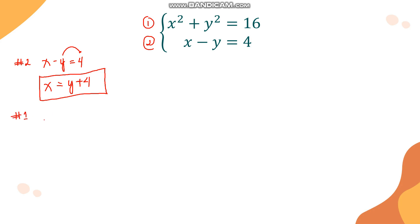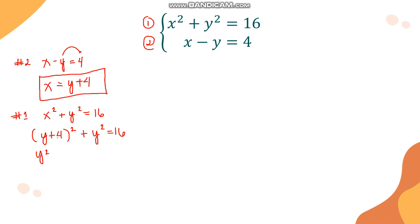Substituting into equation 1 — x squared plus y squared equals 16 — we replace x with y plus 4, giving (y plus 4) squared plus y squared equals 16. Expanding (y plus 4) squared using the square of a binomial shortcut: y squared plus 8y plus 16, plus y squared equals 16.